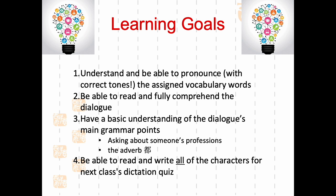At the conclusion of this video, you should be able to accomplish the following learning objectives. Number one, you should be able to understand and pronounce using the correct tones all of the assigned vocab words from Lesson 2, Dialogue 2. Number two, you should be able to read and fully comprehend the dialogue. Number three, you should have a basic understanding of the dialogue's main grammar points, and there are two that we will be focusing on. And finally, you should be able to read and write all of the characters from Lesson 2, Dialogue 2, for next class's in-class quiz.